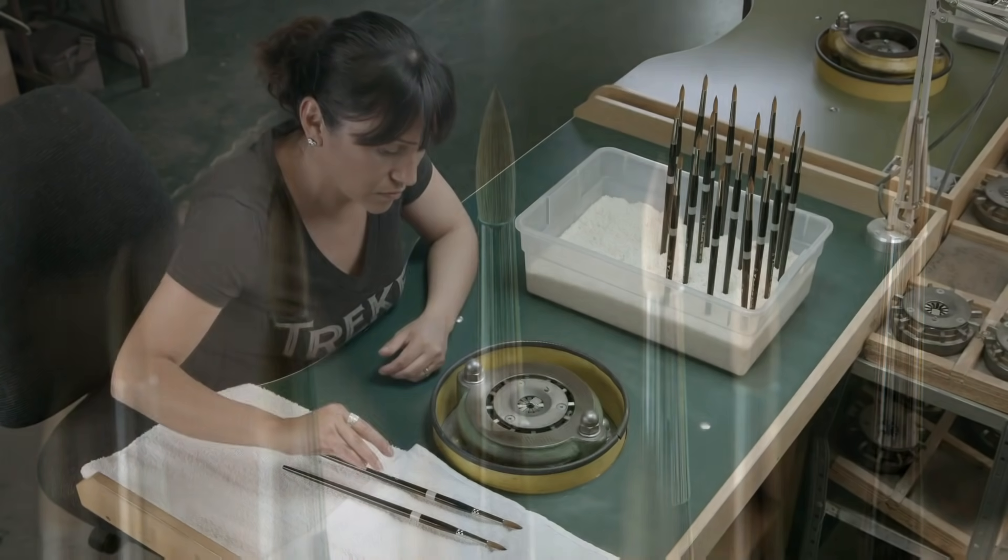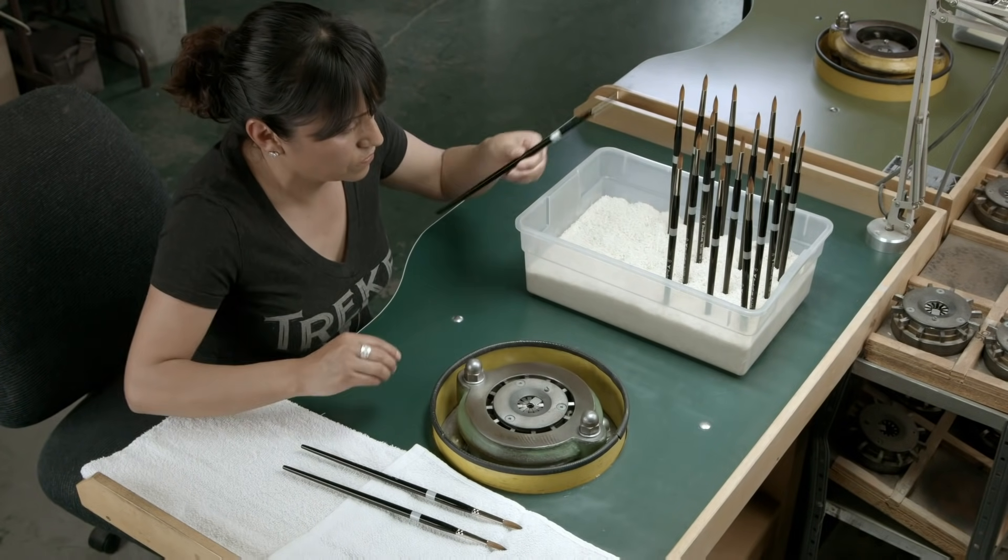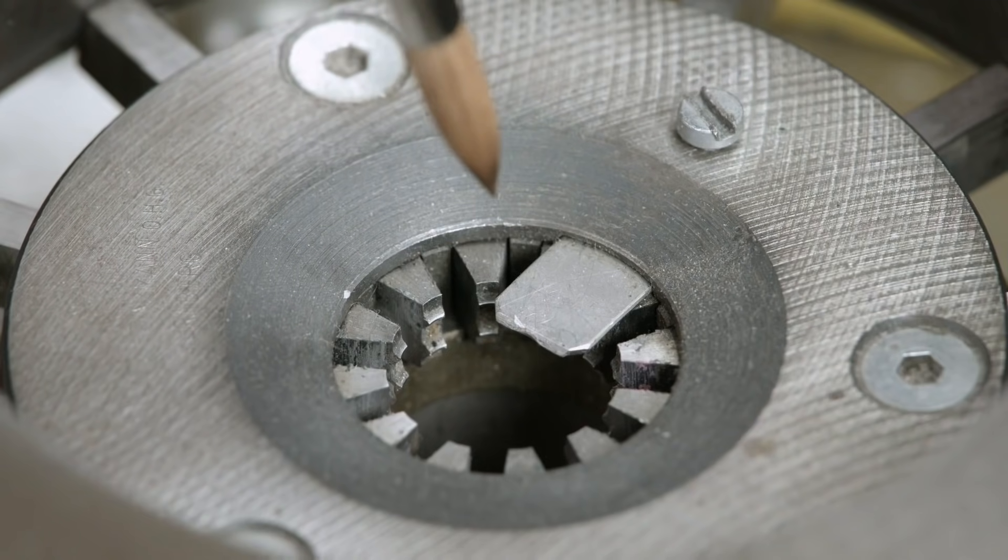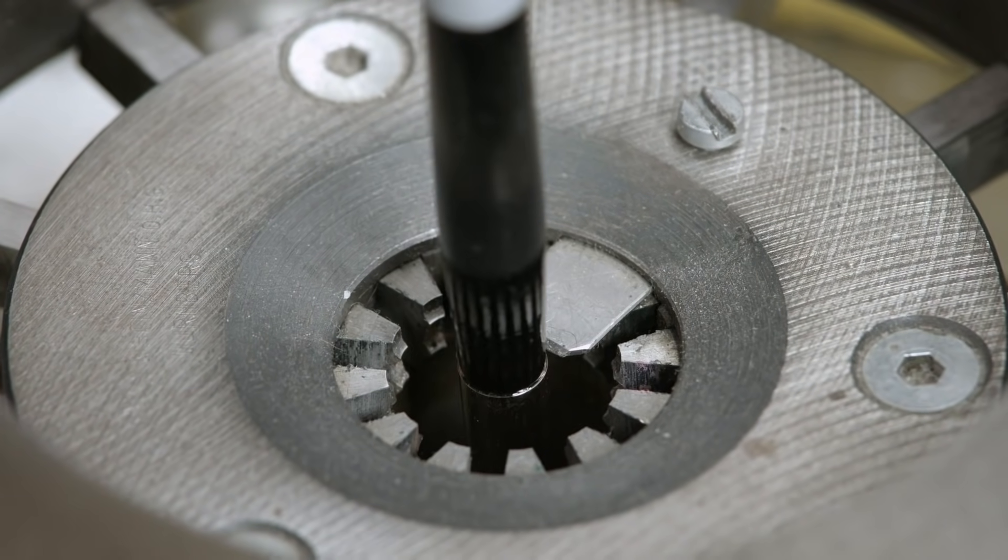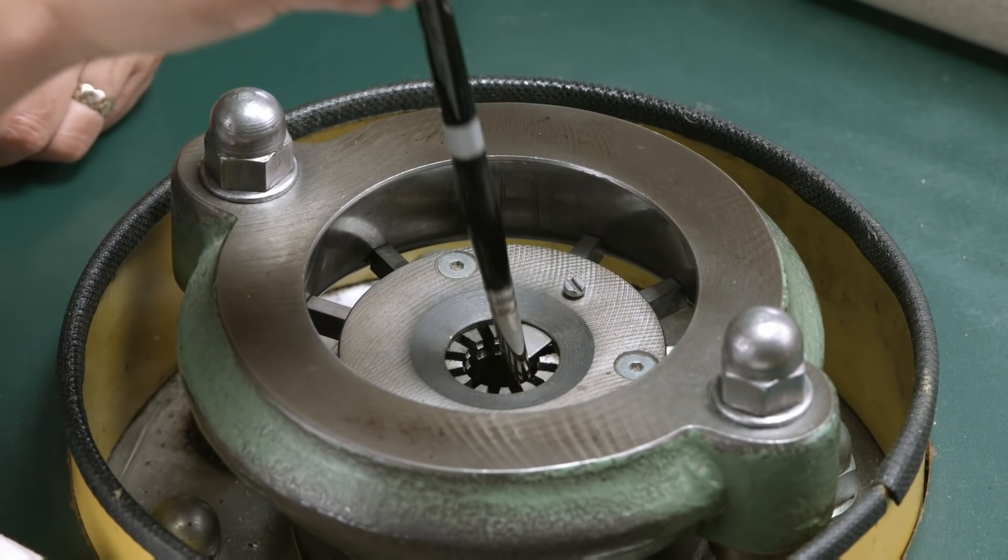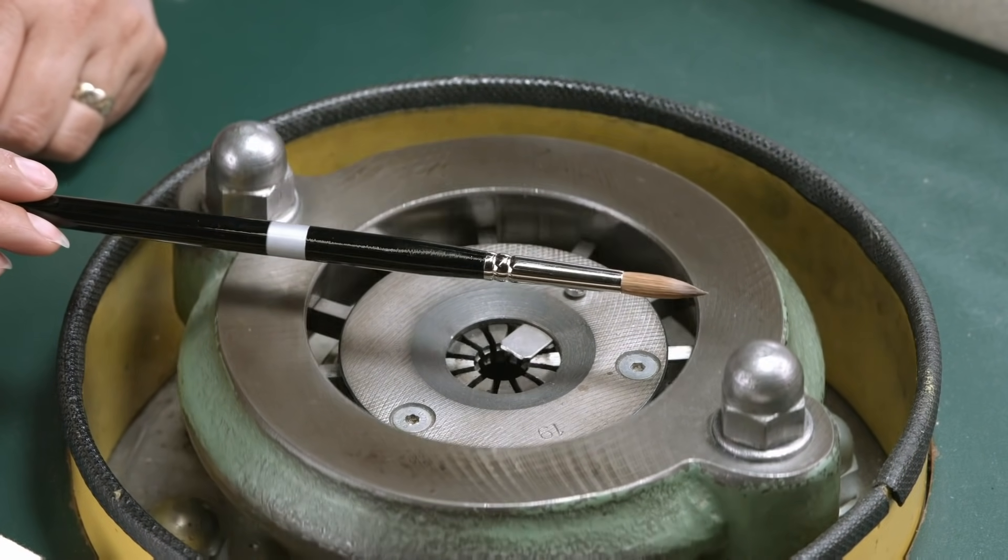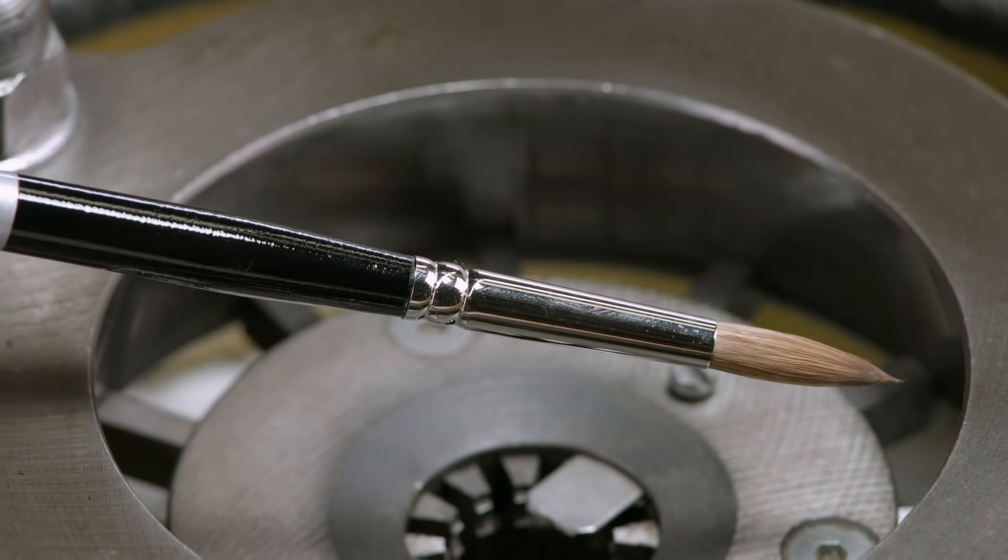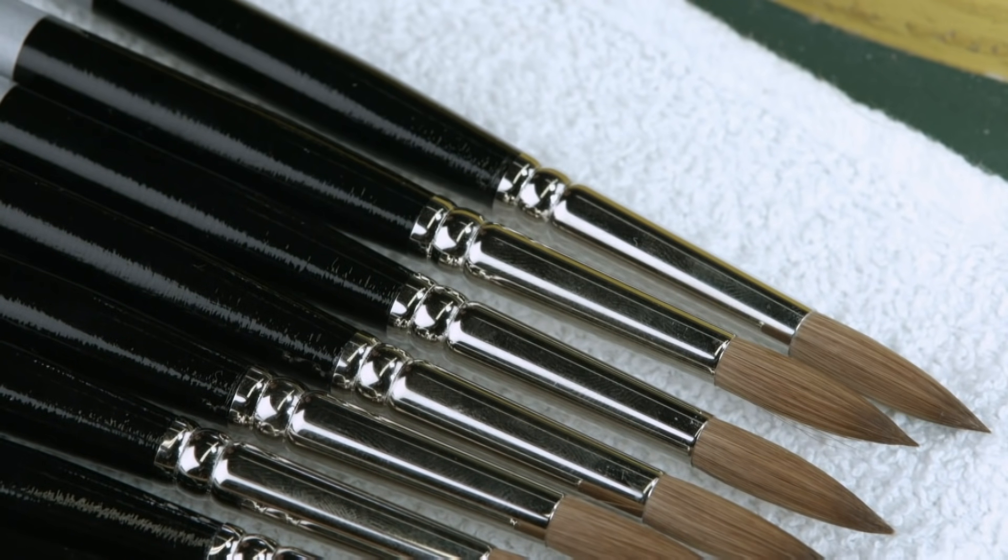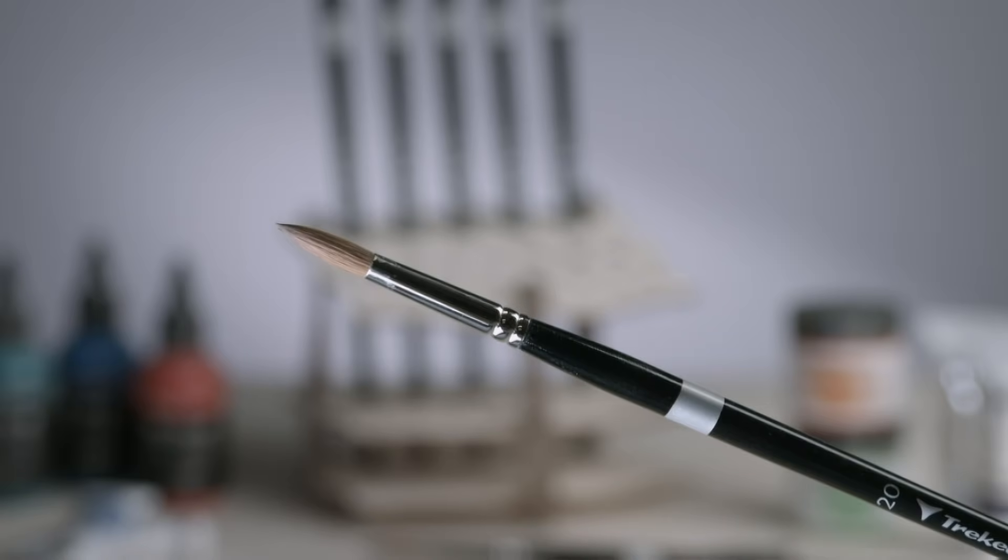The ferrule is then inserted into a crimping machine that's been fitted with a die that's the correct diameter for this brush. The machine crimps the ferrule, so it's now permanently attached to the handle. And once the glue hardens, the paintbrush is ready to paint a thousand words.